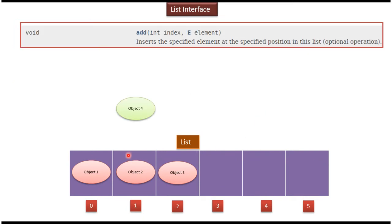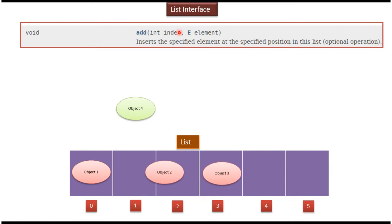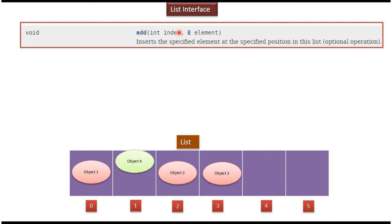Here the list has three objects. Suppose I want to add Object 4 at the first index. Then I have to pass Object 4 to this method and specify the index as 1. What will happen is Object 2 and Object 3 will be shifted to the right, and Object 4 will be inserted at the first index.